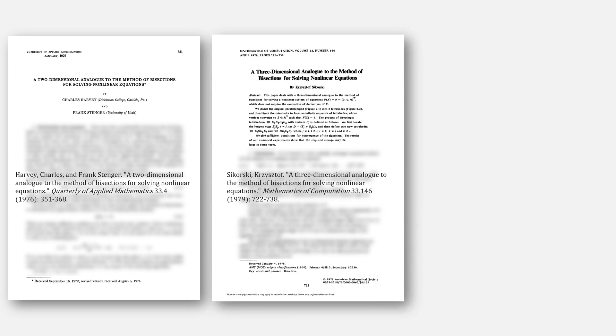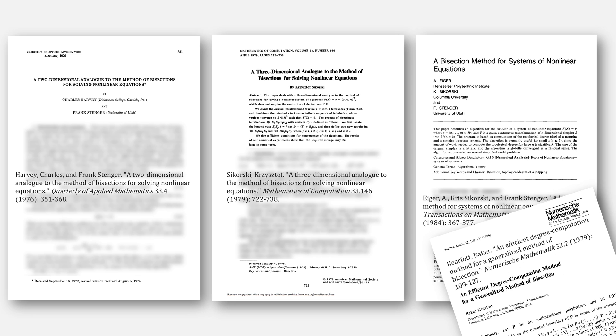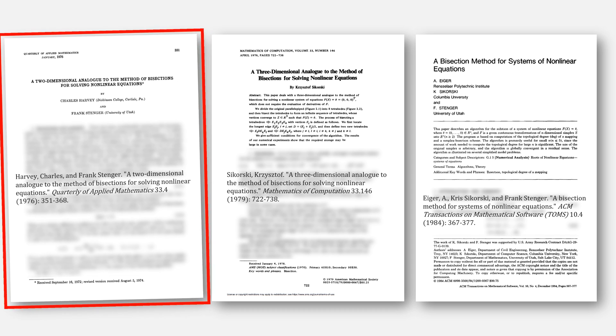Harvey and Stenger came up with a 2D version of bisection, and then a 3D version was developed by Sierkowski. Sierkowski, Stenger, and Iger came up with a more general version of bisection, citing specifically this paper by Kiefer. This video will focus on the 2D version by Harvey and Stenger.